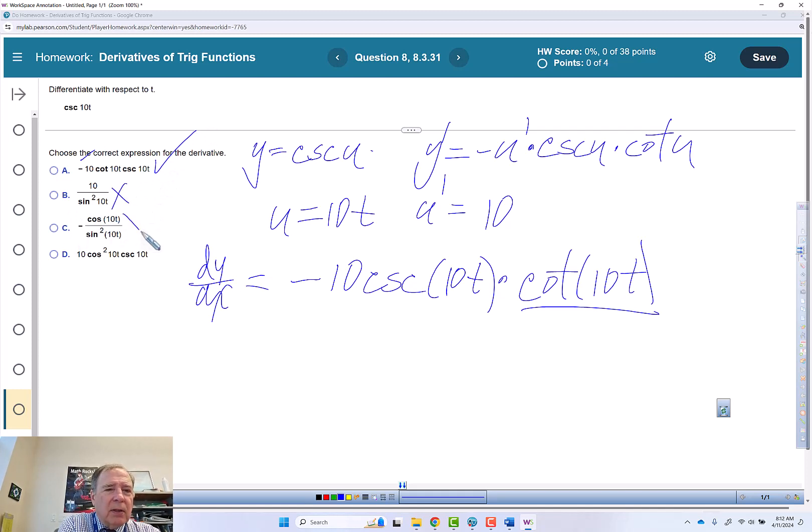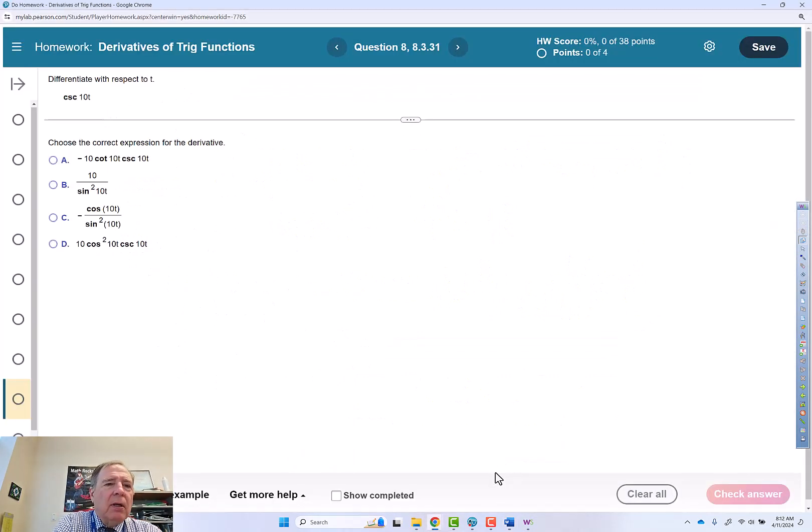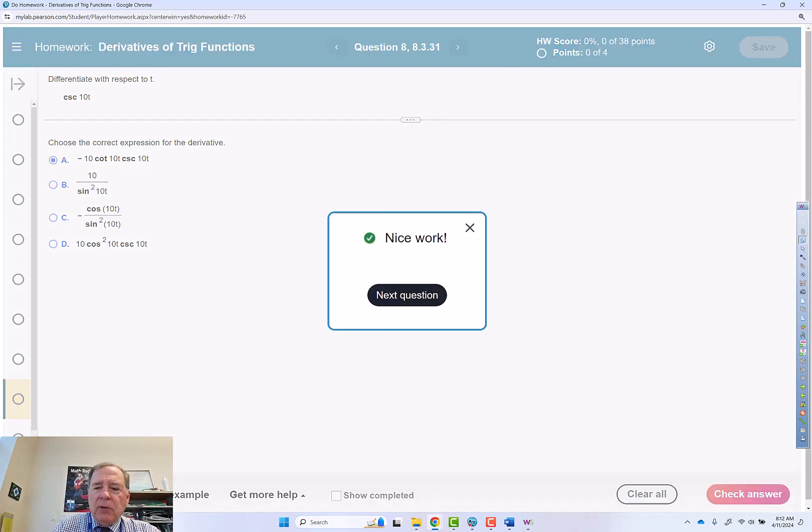That's out of here. That's out of here. The problem with this is, it's just not right. So the correct choice is a. So we'll check that. Nice work.